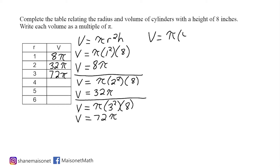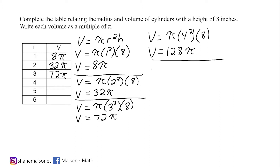The next example has a radius of 4, so we have to take 4 squared and multiply that by 8. We have 16 times 8, which is 128 pi. Let's record that in our table: 128 pi.